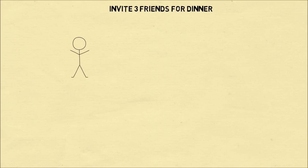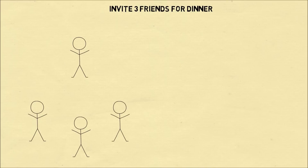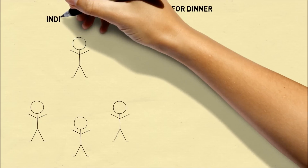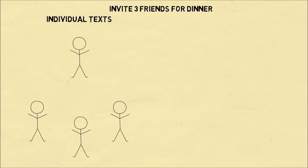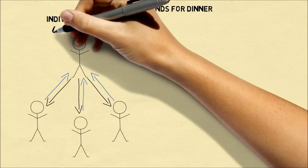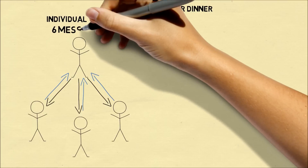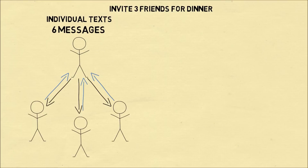Imagine you want to invite three friends for dinner. You'll need to communicate the details to each person in the group. You could send individual texts, in which case you would send a text to each person and each person would reply to you. This is a total of six text messages sent within the group.